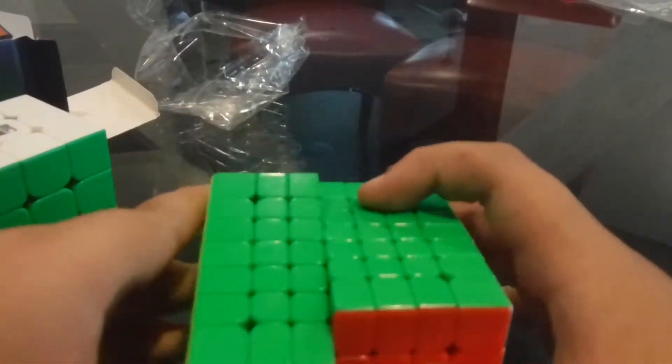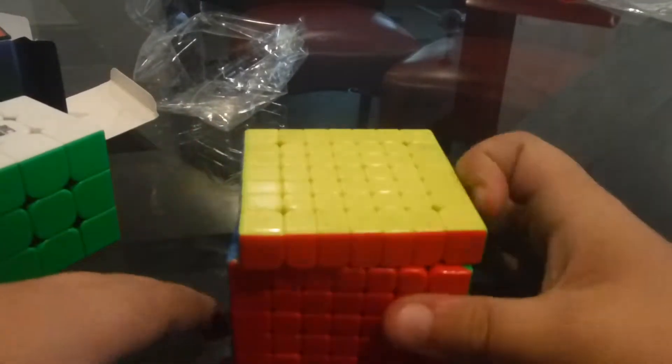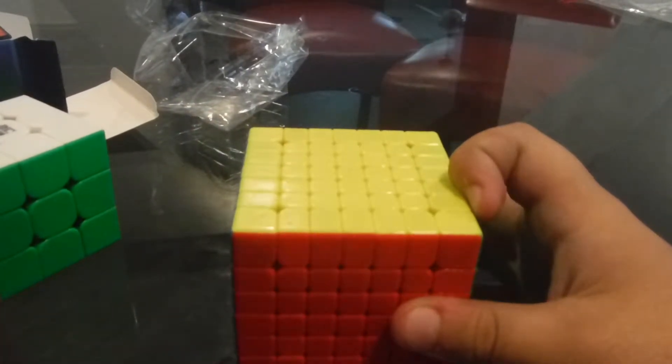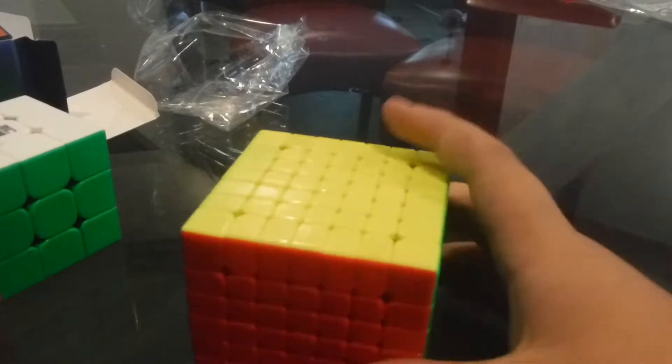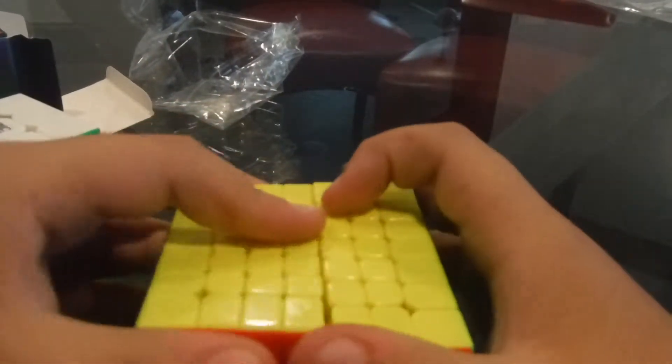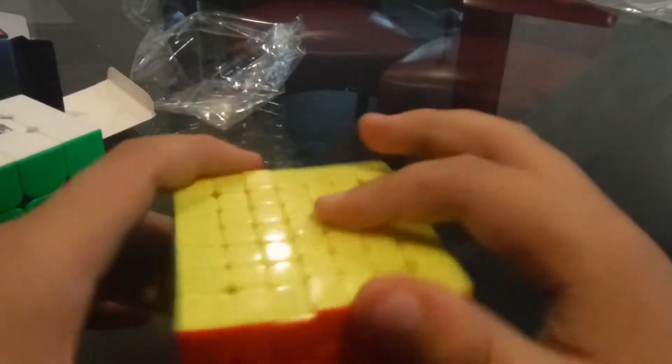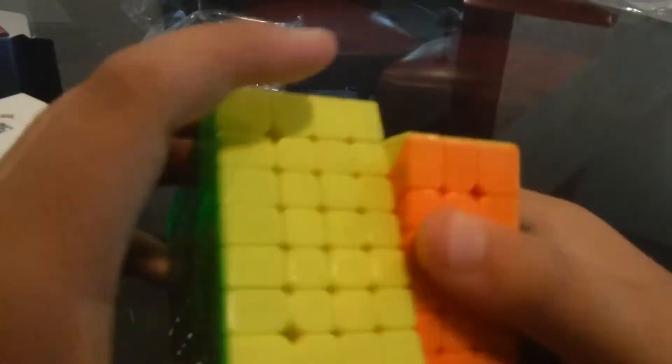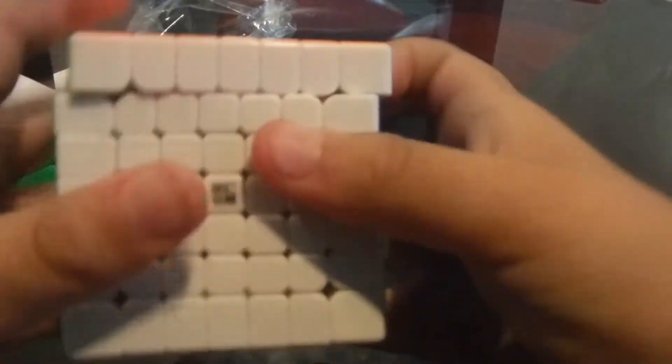The inner layers turn good and the outer layers don't turn that good. I think that's just because there's lubrication in here and they just put it in there and then give it to you. Definitely after a few solves it will get better.